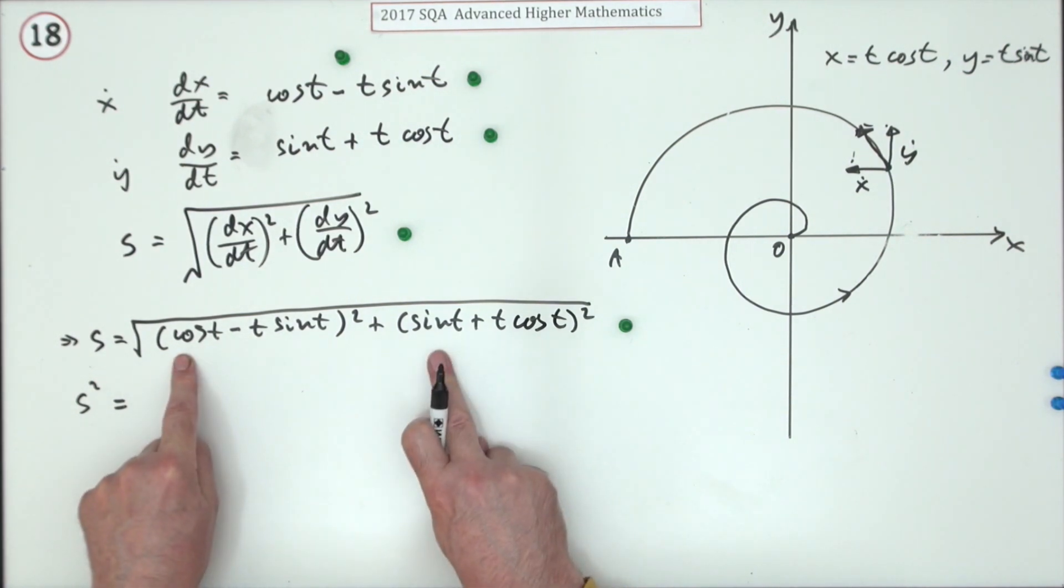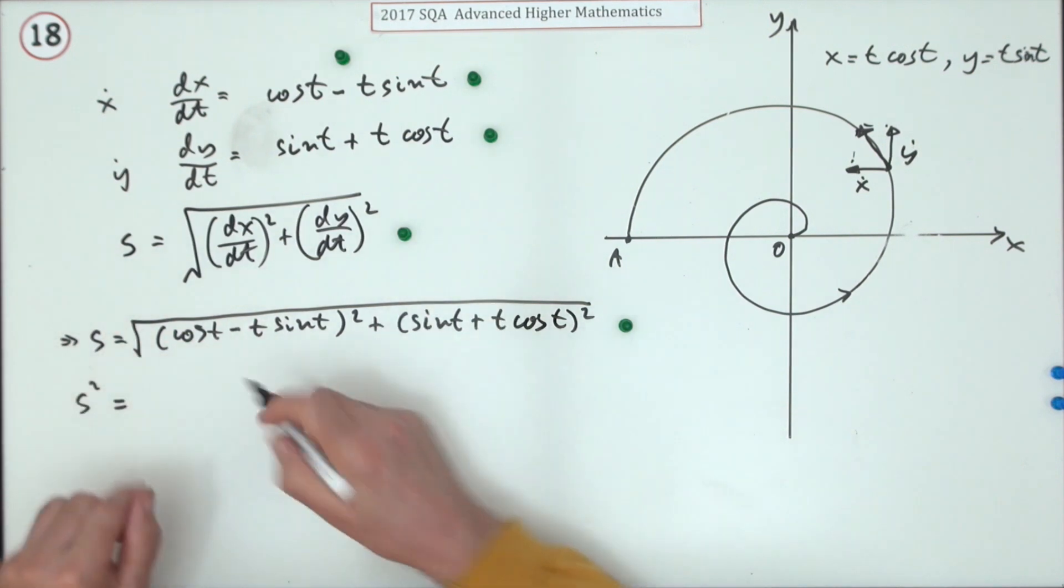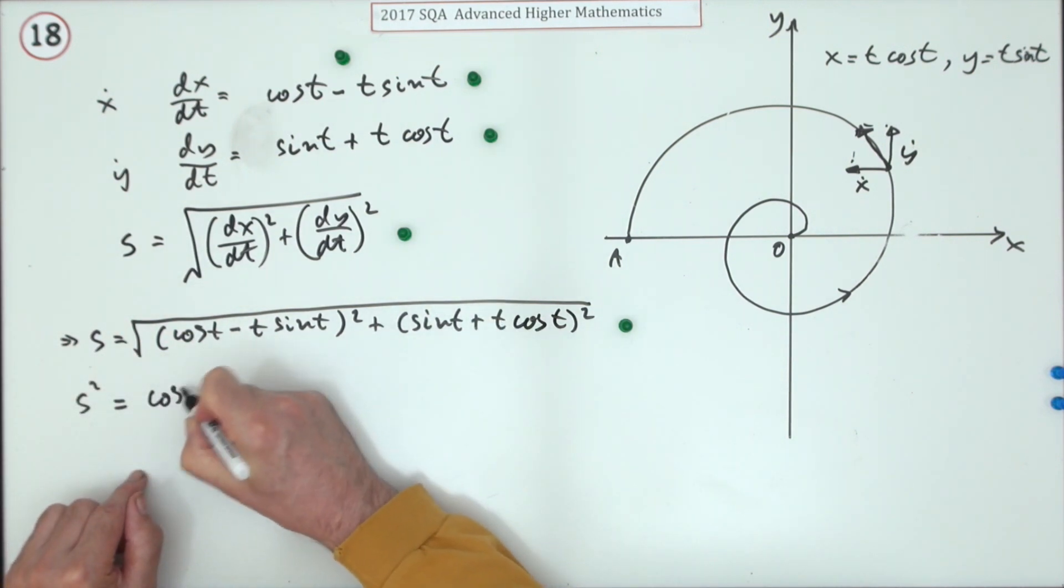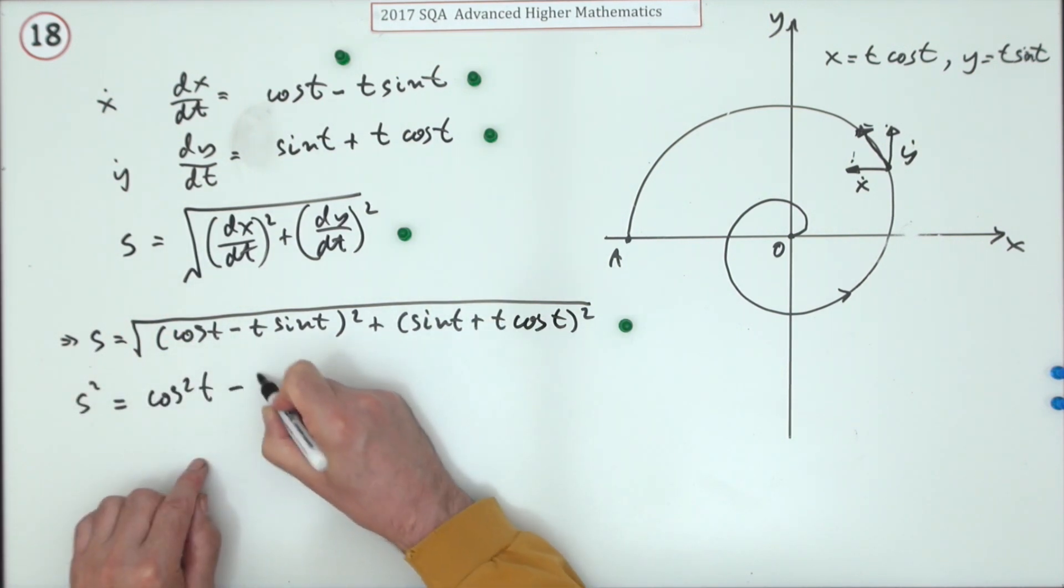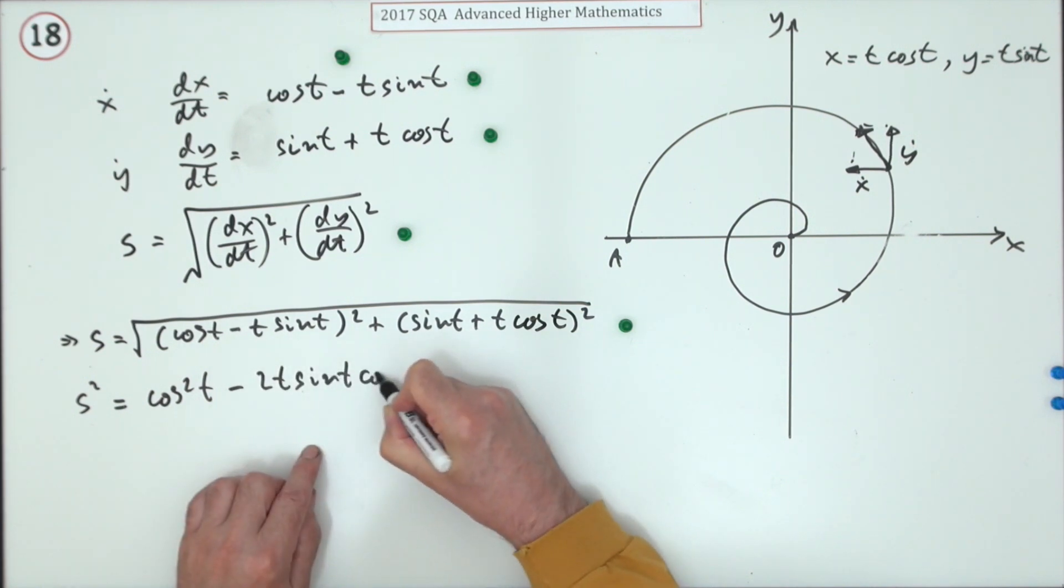Anyway, we'll just multiply it out. So for the first one, square the first—cos squared t—twice the product, minus 2t—I'll just put in the order of sin t cos t—square the last, t squared sin squared t.